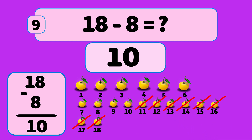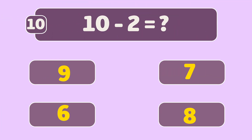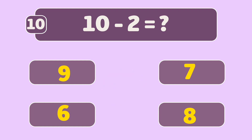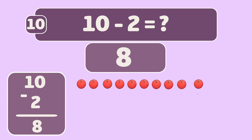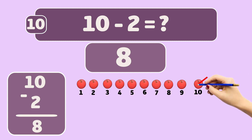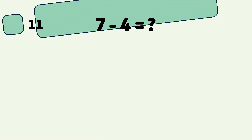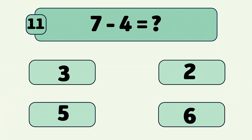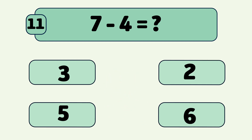Now we have 10 oranges left. What is 10 minus 2? The answer is 8. We start with 10 apples and remove them one by one: 10, 9. Now we have 8 apples left.